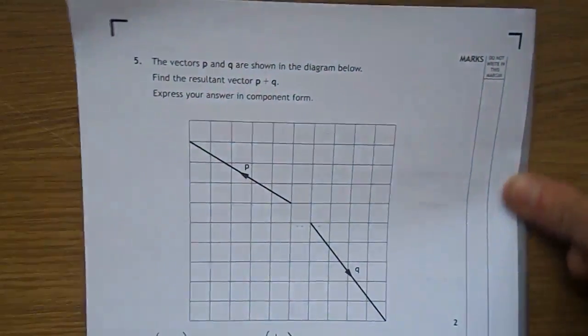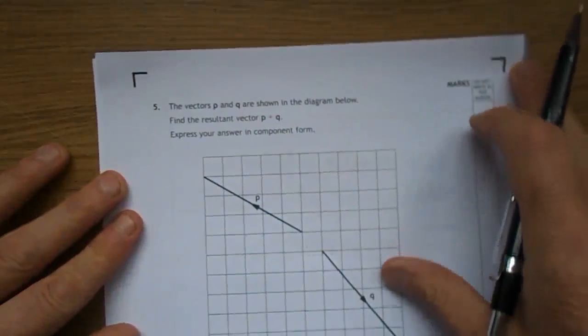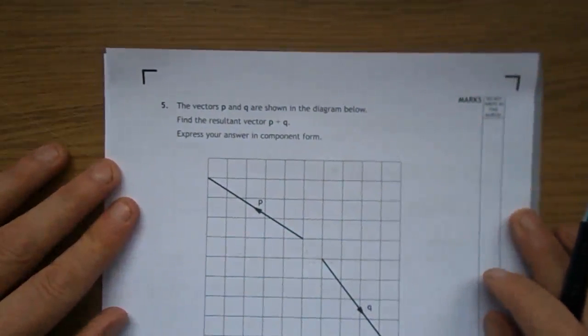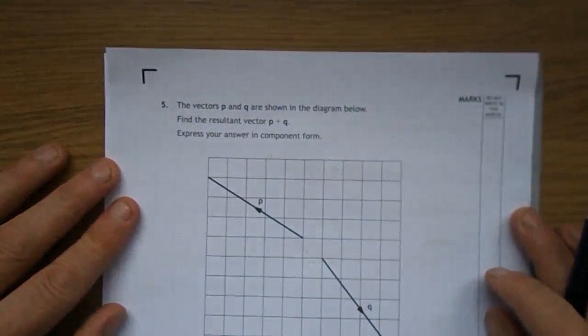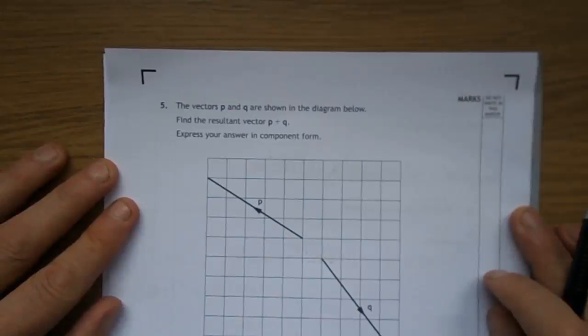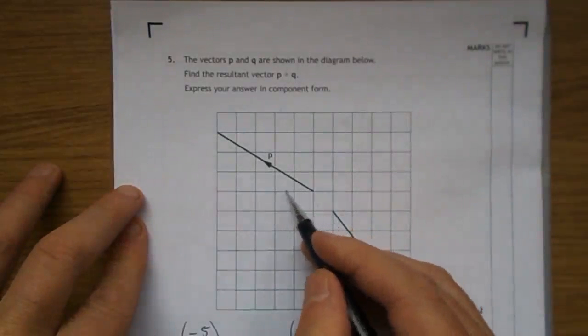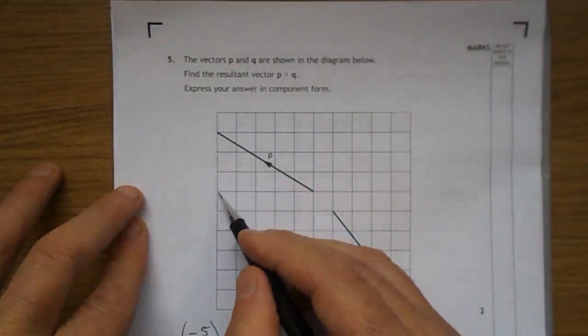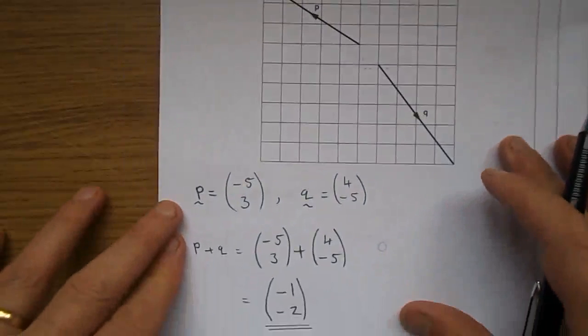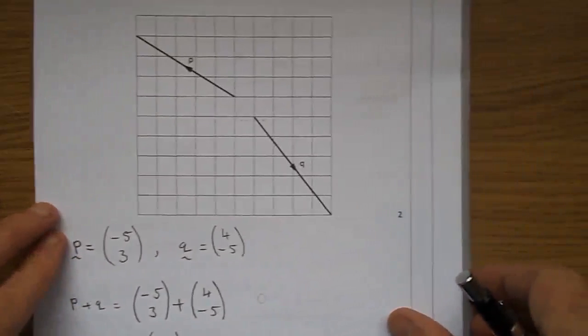Question 5. A couple of vectors for you to deal with here. The vectors p and q are shown in the diagram below. Find the resultant vector, or what happens when you add vector p and q. Give your answer in component form. Let's have a look. What does vector p do? It takes you 1, 2, 3, 4, 5 back, and 3 up. So, vector p is minus 5, 5 back, 3 up.